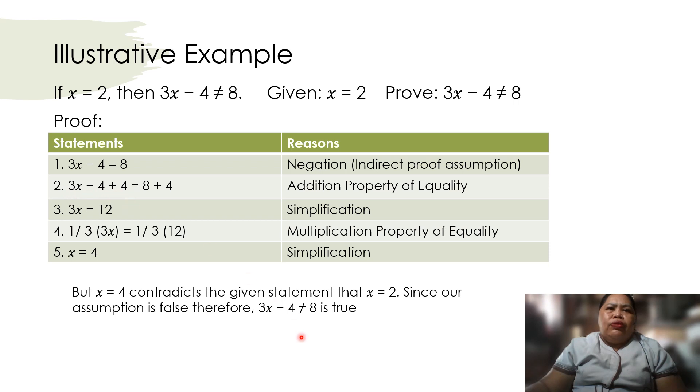3x minus 4 equals 8. Of course, we use the addition property of equality, so we add 4 here. Then we have 3x is equal to 12, true simplification. Then using multiplication property of equality, multiply both sides by one-third. So we cancel the 3 here, and the answer is 4, true simplification.